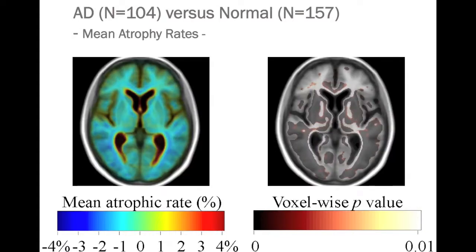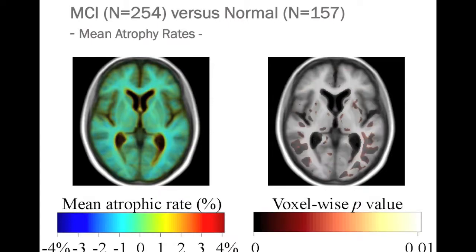Taking a coronal cut through the brain just below the level of the eyes, you'll also see the preferential loss of tissue in Alzheimer's disease in these temporal lobe systems, with very prominent expansion of the fluid-filled spaces. In MCI, the rate of brain atrophy is about half that seen in an Alzheimer's patient, but still different from healthy controls.